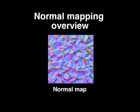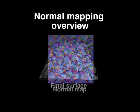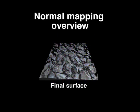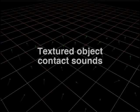Our method uses normal mapping, a common technique in visual rendering. The normal map is used to represent the bumps on a surface. This provides a very detailed rendering of a surface, even if the underlying geometry is simple. Our method uses these normal maps to enhance physical sound synthesis.